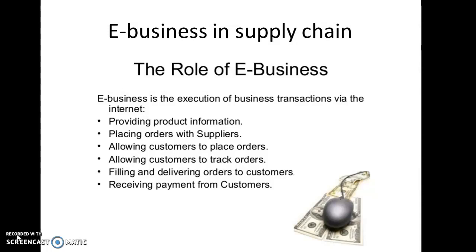The next role is placing orders with suppliers — an enterprise or manufacturer can place orders with suppliers through the internet using its own software or through ERP software. Next is allowing customers to place orders through the internet. Customers can also track their orders to know the status after placing them. Then there is filling and delivering orders to customers, and finally receiving payment from customers through various payment methods available online.